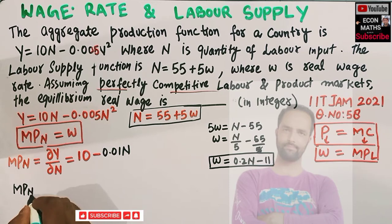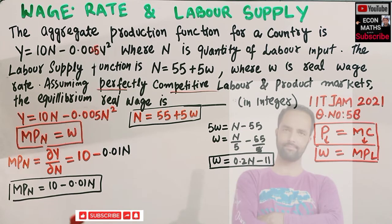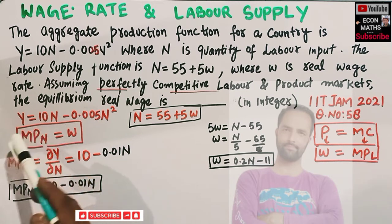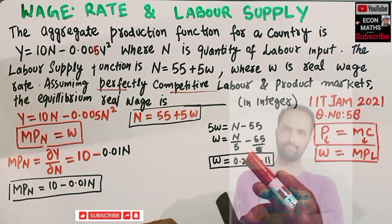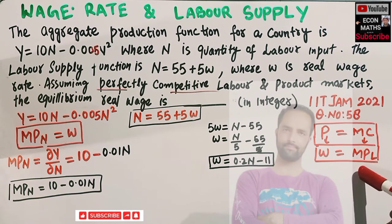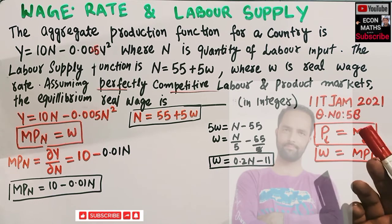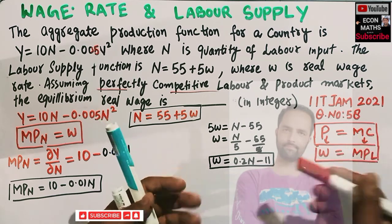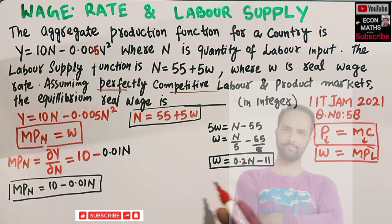Now equate these two, because equilibrium occurs where marginal product of labor equals the wage rate. This also makes sense because a profit-maximizing firm will hire workers up to the point where the marginal product of labor equals the real wage rate, since it is not efficient for a firm to pay workers more than it will earn in revenue from their labor.